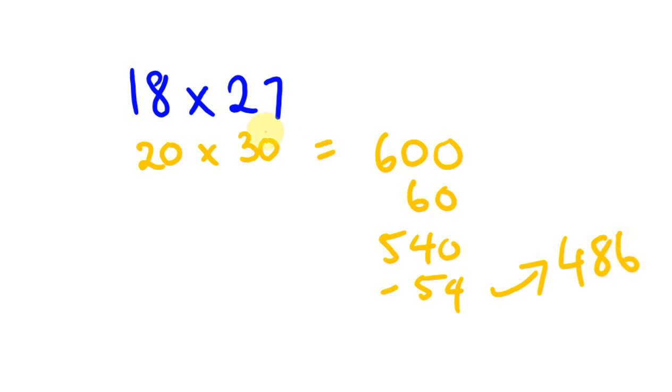So we take 10% off that. 10% is 60. We're going to end up with 540. And take 10% off again, we get our answer, which is going to be 486. So what we do is we do the same thing. We can round it up. When we round up both, we have to take off 10% twice.